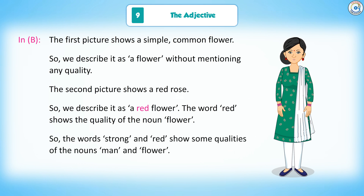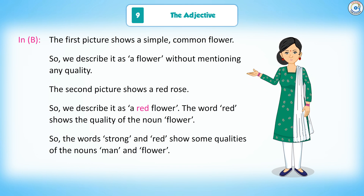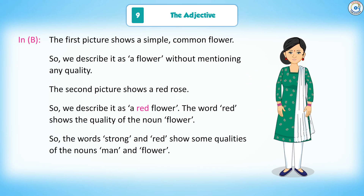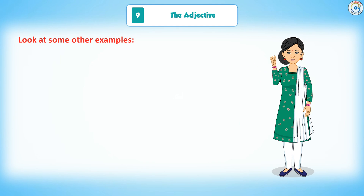So, the words 'strong' and 'red' show some qualities of the nouns 'man' and 'flower.' Look at some other examples.